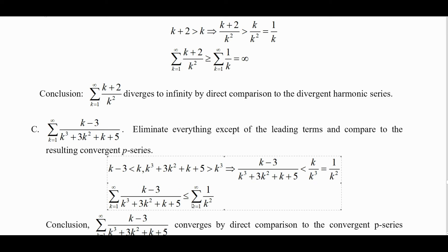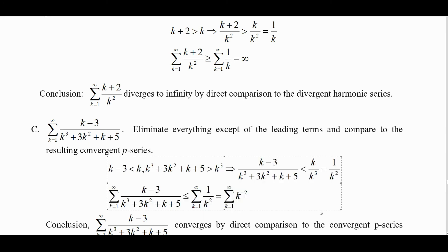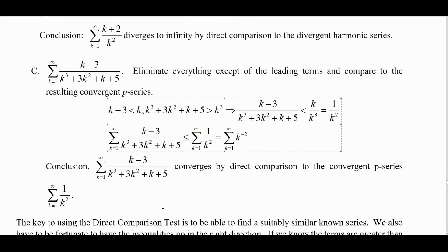When we sum this infinite series, it must be less than or equal to the sum of this p-series — where p equals 2, written as k to the negative 2 — which converges. So the conclusion is: this series converges by direct comparison to the convergent p-series sum of k to the negative 2.